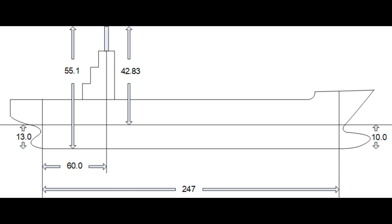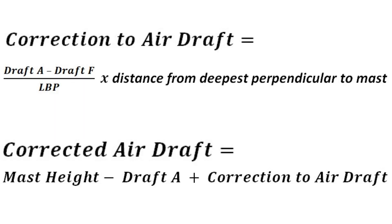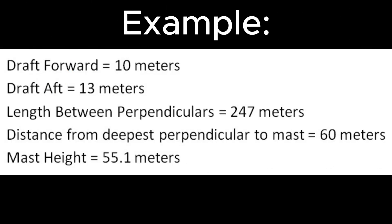Let's translate the aforementioned text into two equations. Draft forward equals 10 meters, draft aft equals 13 meters, length between perpendiculars equals 247 meters, distance from deepest perpendicular to mast equals 60 meters, and mast height equals 55.1 meters.